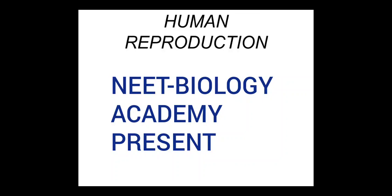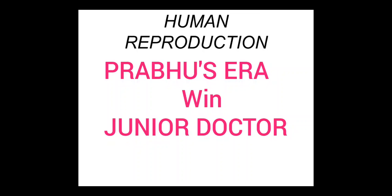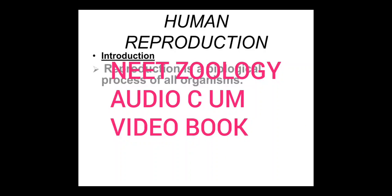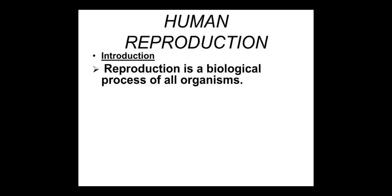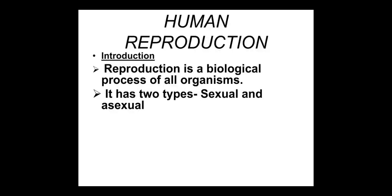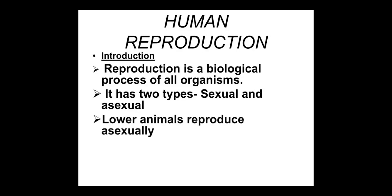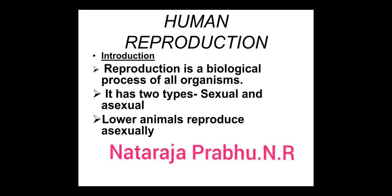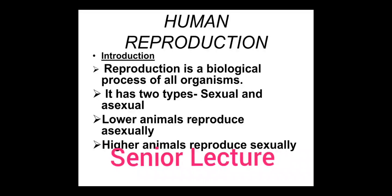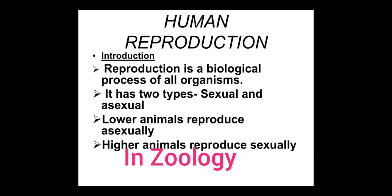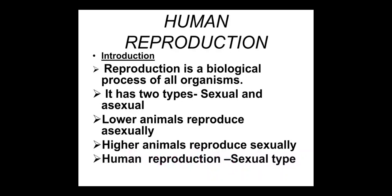Namaste students. Today's video we are going to discuss complete information about human reproduction. As an introduction, reproduction is a biological process — like the digestive system and respiratory system — which occurs in all living organisms. It has two types: sexual reproduction and asexual reproduction. Lower animals reproduce asexually — like amoeba and paramecium — while higher animals reproduce sexually, requiring two gametes. Human reproduction comes under the sexual type.